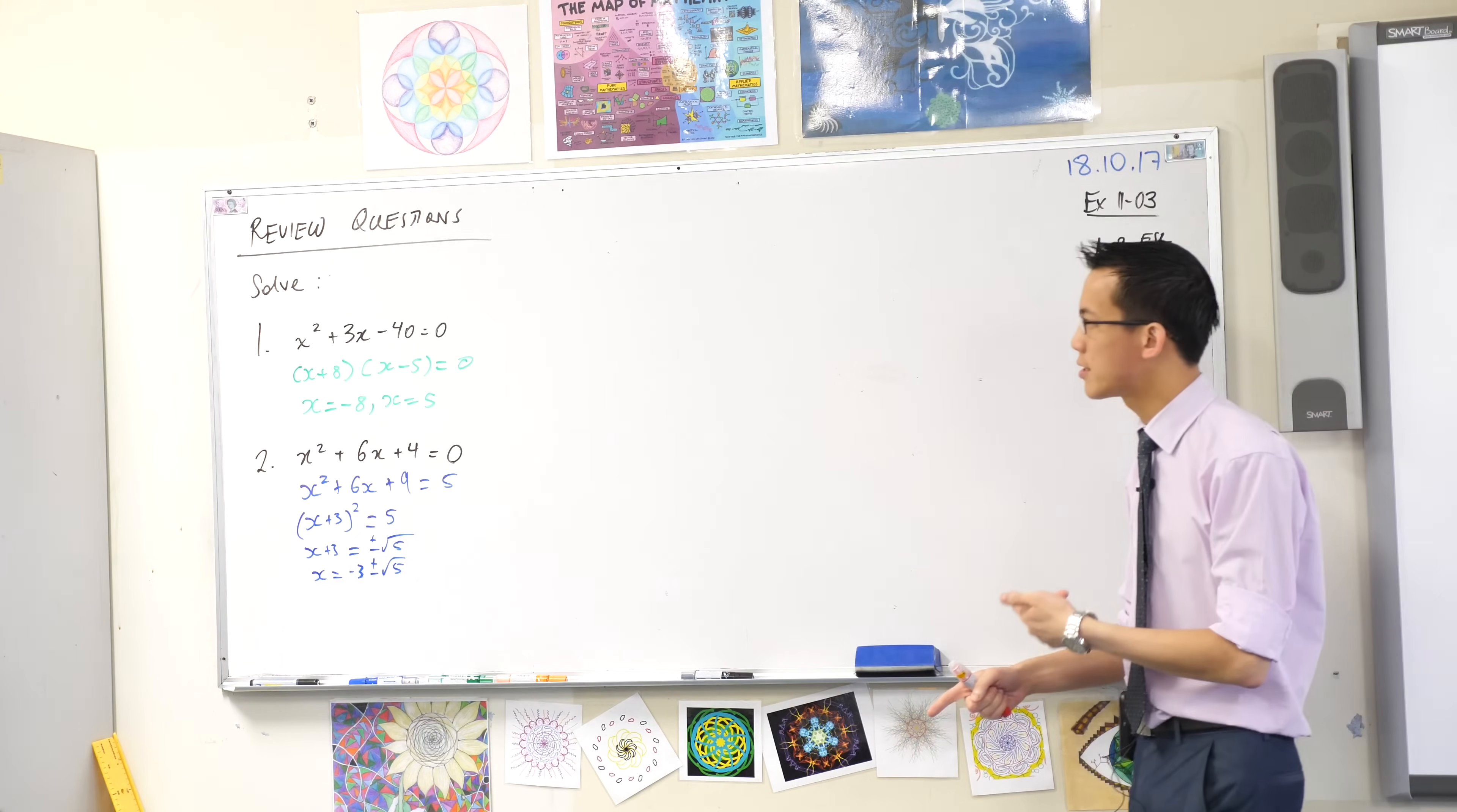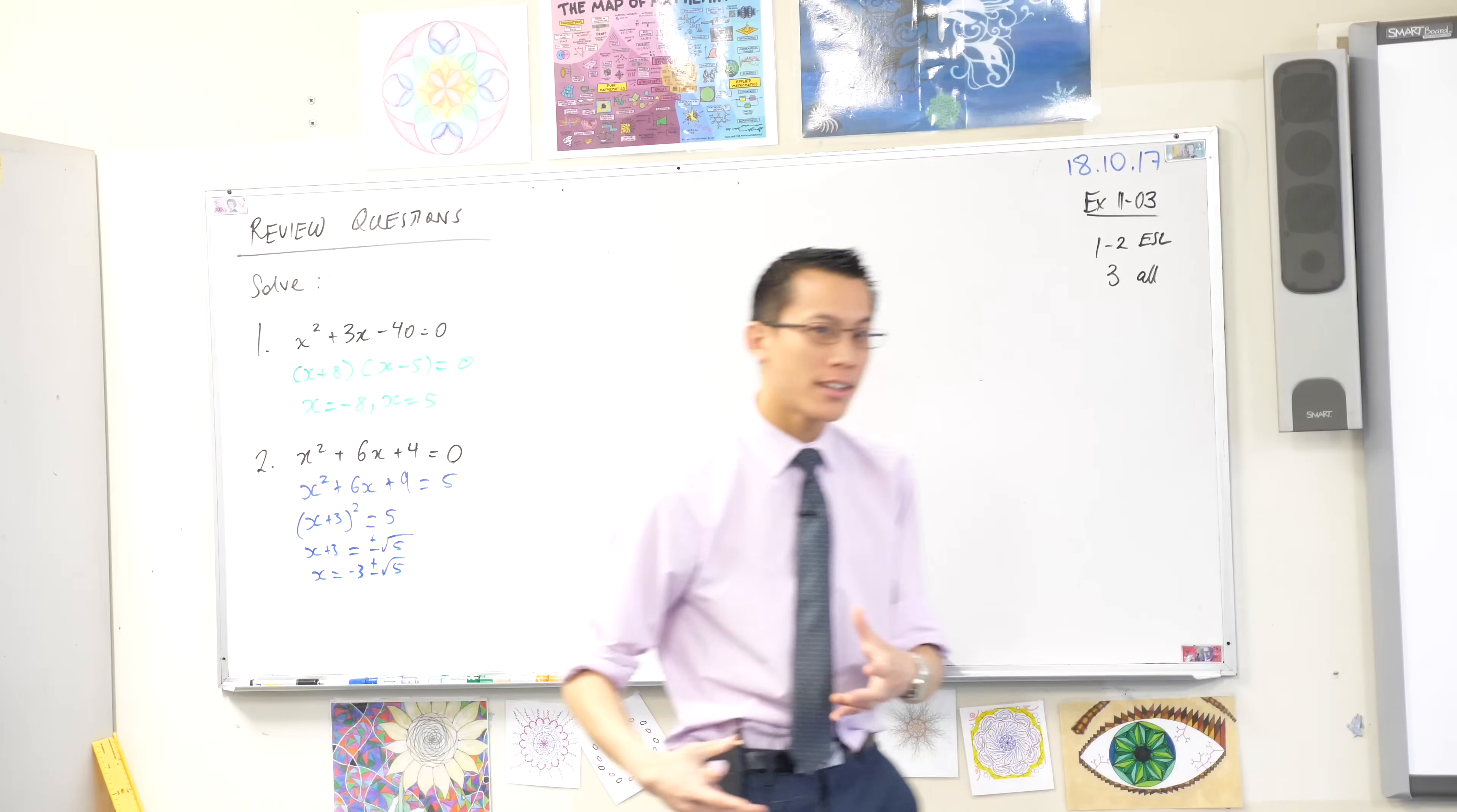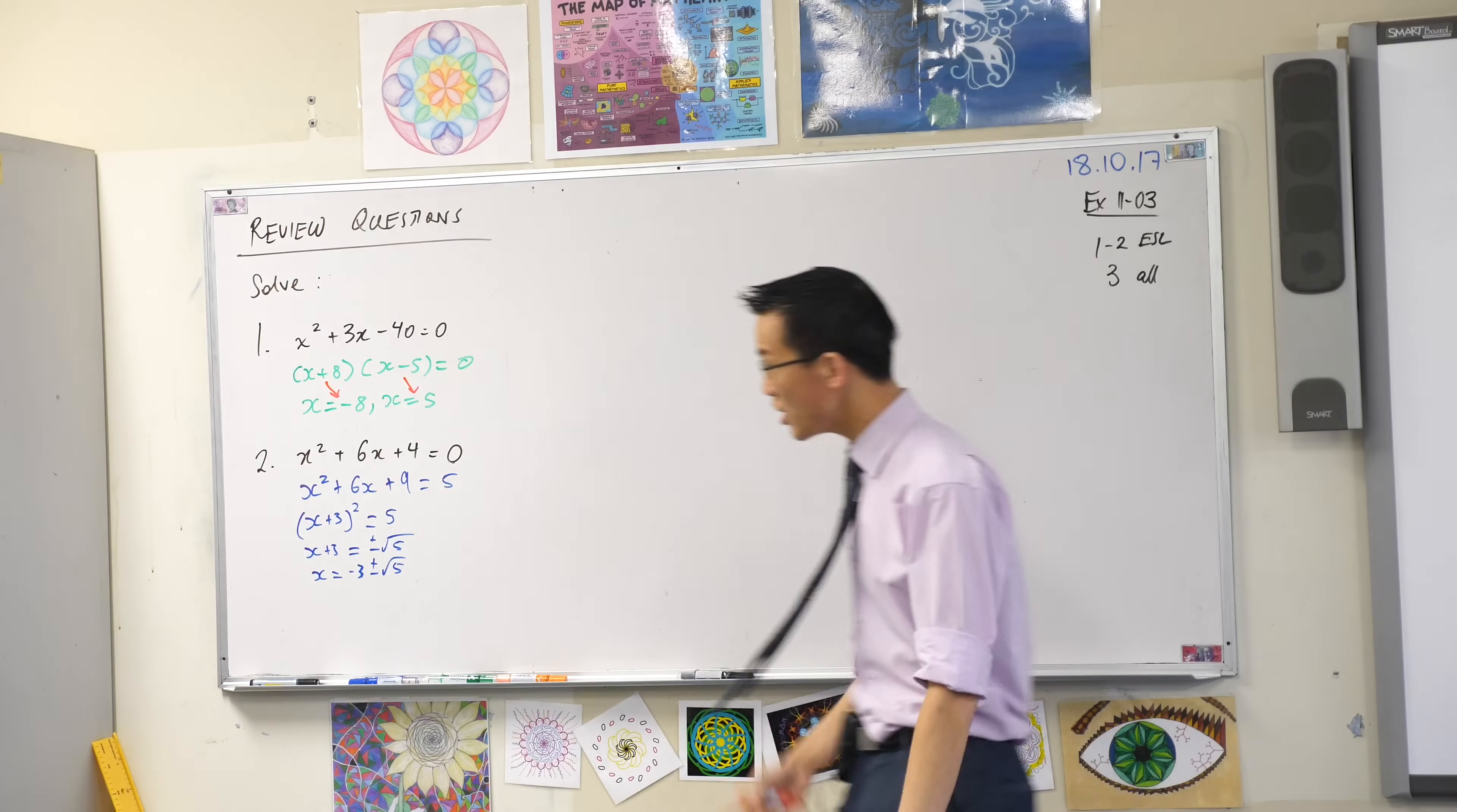So he's factorized first and then he looks at each of his factors and sees each factor gives him a solution. The x plus 8 factor gives him this solution and the x minus 5 factor gives him this one. Thumbs up, great job. It's flawless.